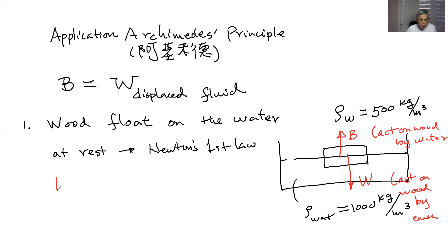So we know B, the buoyancy on the wood, is equal to the weight of the wood itself. The weight of the wood is equal to the volume of the wood times density of the wood. So if we know the volume, then we know the buoyancy.